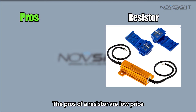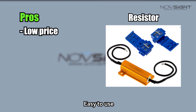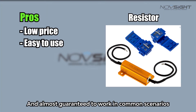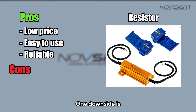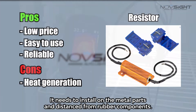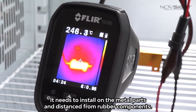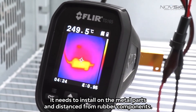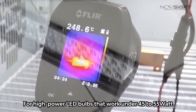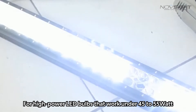The pros of a resistor are low price, easy to use, and almost guaranteed to work in common scenarios. One downside is it will generate lots of heat — it needs to be installed on metal parts and kept at a distance from rubber components.